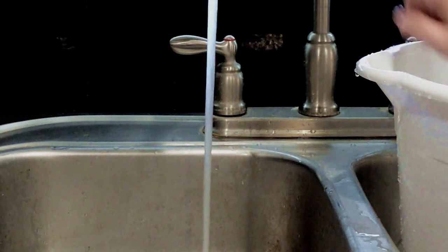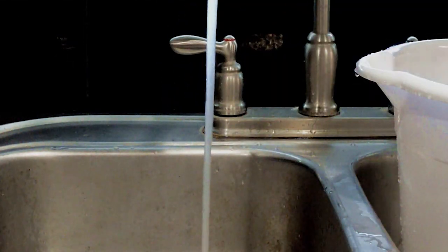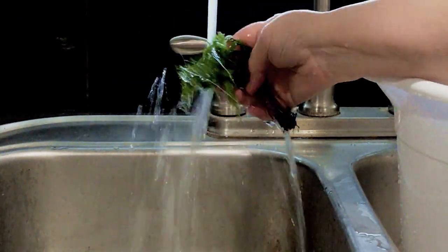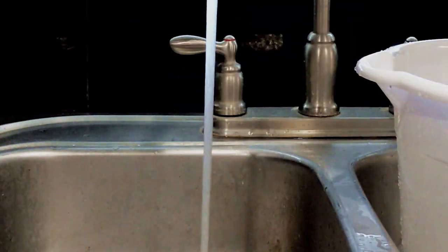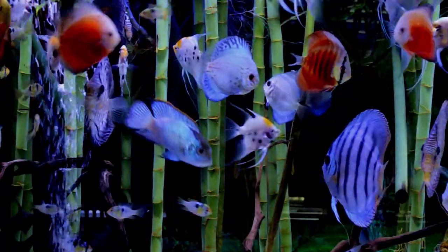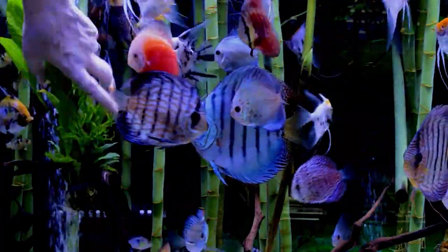Leave plants undisturbed in a dark place for 5 to 12 hours. Remove plants and rinse well in fresh water. Place plants in the tank. And that's it.